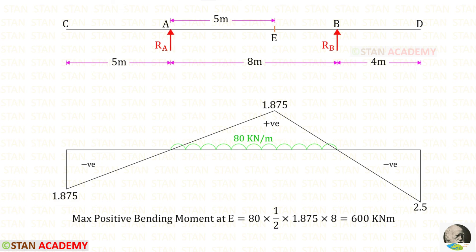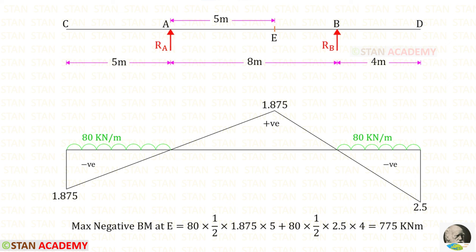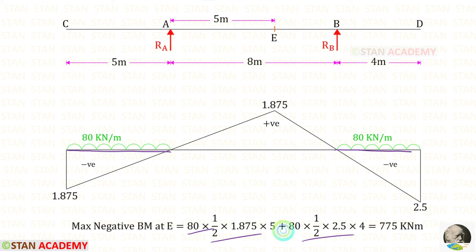To find the maximum positive bending moment, we keep the UDL over the positive triangle region, find the area, and multiply by 80 to get 600 kN·m. To find the maximum negative bending moment, there are two triangles with negative bending moment; we keep the UDL over both, find the triangle areas, multiply by the UDL, and add to get 775 kN·m.